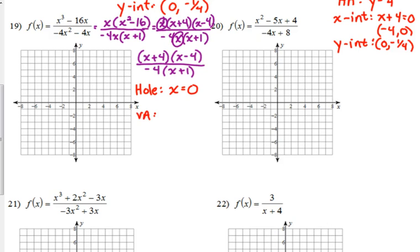Vertical asymptote, what's left in the denominator, we set equal to 0. Negative 4 doesn't equal 0, so we only have to worry about the x plus 1 equaling 0. So that means our vertical asymptote is at x equals negative 1. So we'll go ahead and put that on our graph, vertical dashed line at negative 1.